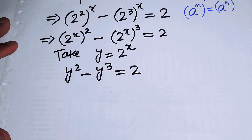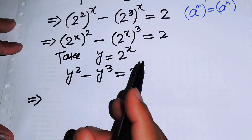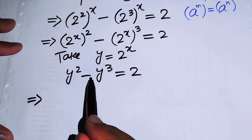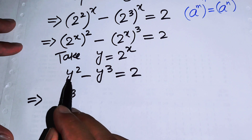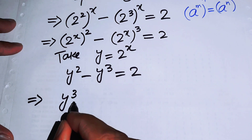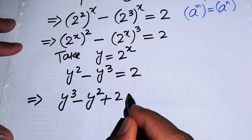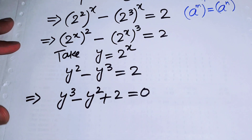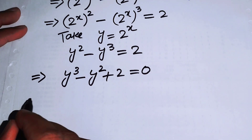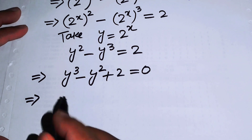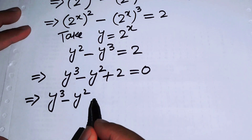We rearrange all terms to the left-hand side. Moving negative y cubed gives plus y cubed, and moving y squared gives minus y squared, resulting in y cubed minus y squared plus 2 equals 0. Now we factor this cubic equation.